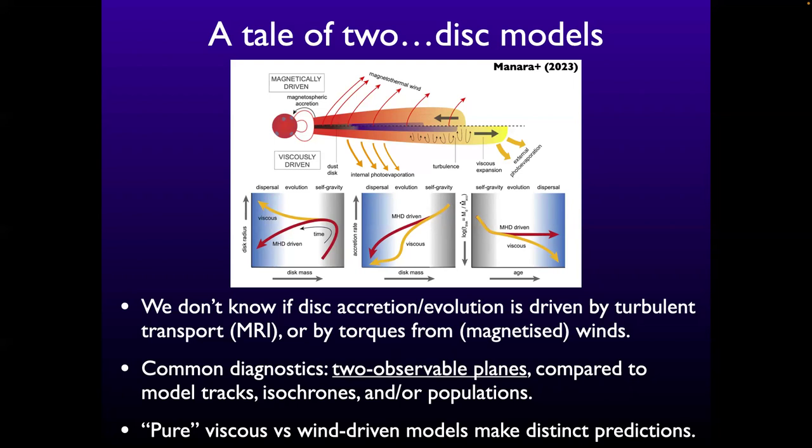A lot of recent work has gone into figuring out the dominant driver. This is summarized in a Protostars and Planets chapter by Carlo Manara, Giovanni Rosotti, and co-authors, where they compare the canonical magnetic-driven model and the viscously-driven model — the two limiting cases. The way you try to tell the difference is through demographics: you look at the population of disks where you can observe masses, accretion rates, and sizes, and ask how the different models evolve. For example, in a viscous model the disk must expand to conserve angular momentum as it accretes, while in a magnetic model the disk doesn't expand or even shrinks because angular momentum is carried away.